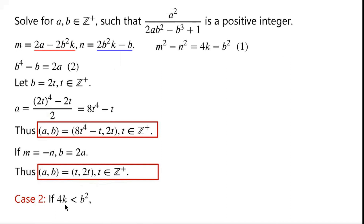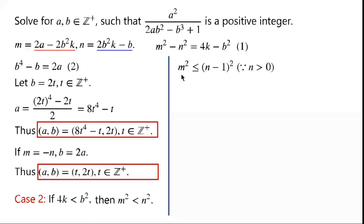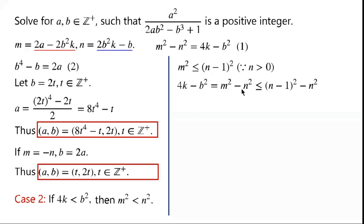In Case 2, if 4k is less than b squared, then from the equation we know that m squared is less than n squared, which means m squared is less than or equal to (n minus 1) squared, because n is greater than 0. So from the equation, 4k minus b squared equals m squared minus n squared, which is less than or equal to (m minus 1) squared minus n squared, which equals minus 2m plus 1.